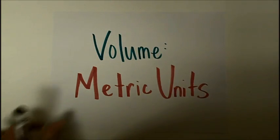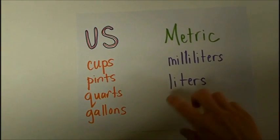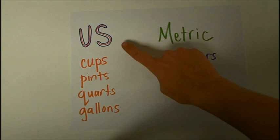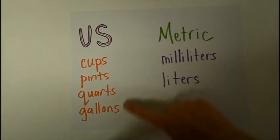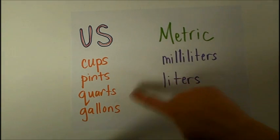This is volume in metric units. In the last video, we looked at the four units of U.S. customary volume: cups, pints, quarts, and gallons.